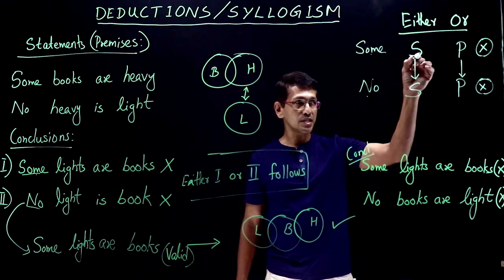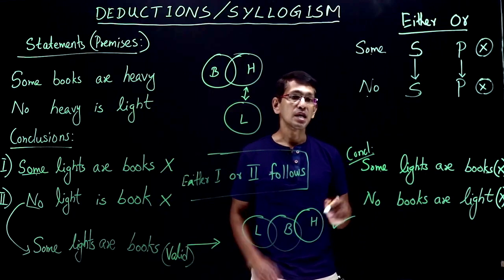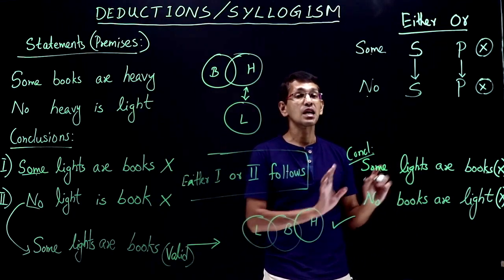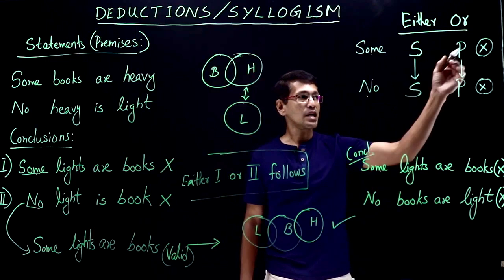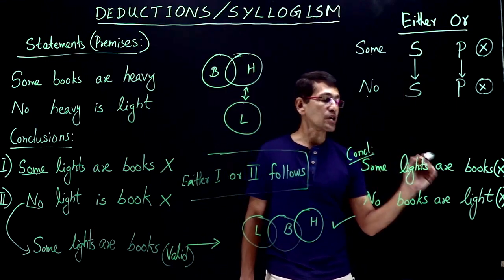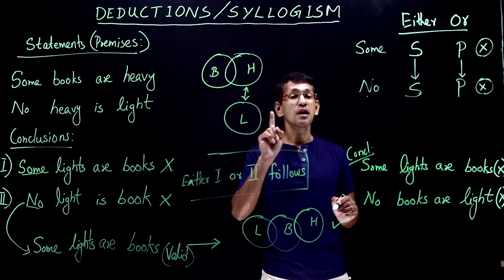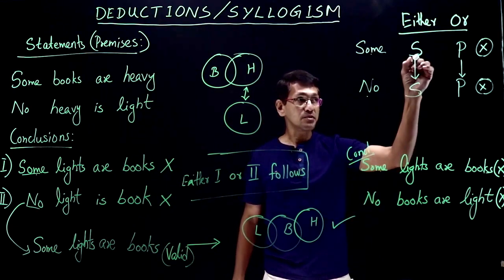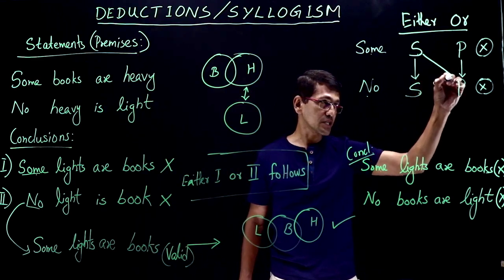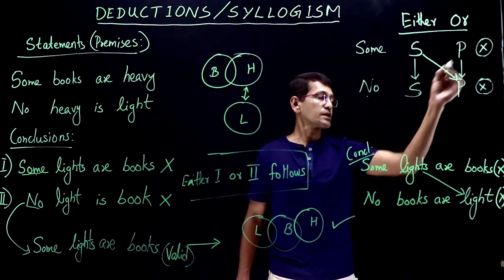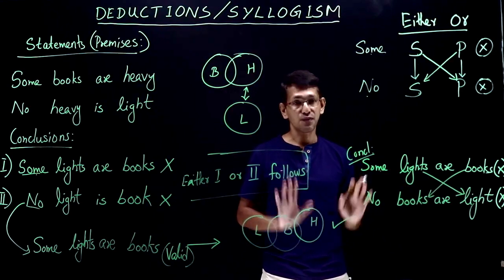When I have two conclusions that do not follow, one is some and the other is no, I need to be really careful. Now what I need to check is: subject is subject. In this case, subject is not subject — subject is predicate, and predicate is subject. Earlier we said subject must be subject and predicate is predicate. In this case, subject is predicate and predicate is subject. If that is the case, is it either-or pair?